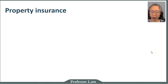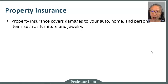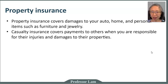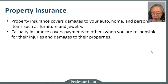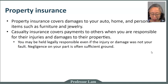Property insurance has two main purposes. The first is that it is used to cover damages to your personal property — that includes automobile, home, and other personal items from your laptop to jewelry or heirloom furniture. Casualty insurance covers payments that you need to make to other people because of injuries or damage to their property because of incidents that relate to you. So property insurance covers your own possessions whereas casualty insurance covers damages to other individuals.